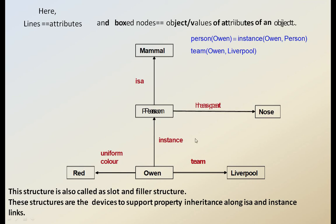Mammal is a person, person has a part nose, and Ovan is one kind of person — an instance of the person. He is in the team of Liverpool and has the uniform color red. This double-dashed triangle-marked double line represents the lines of attributes. This is the structure of property inheritance: Mammal is the base class, Person is the intermediate base class, and Ovan is the instance of this class.